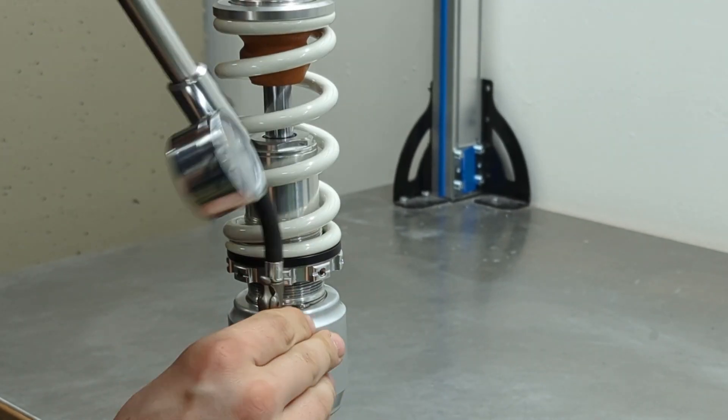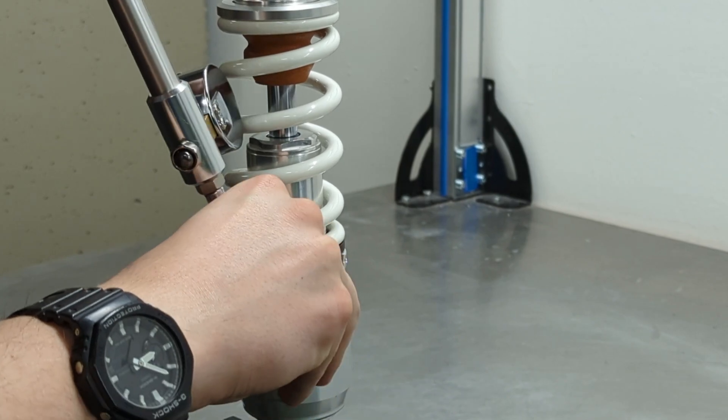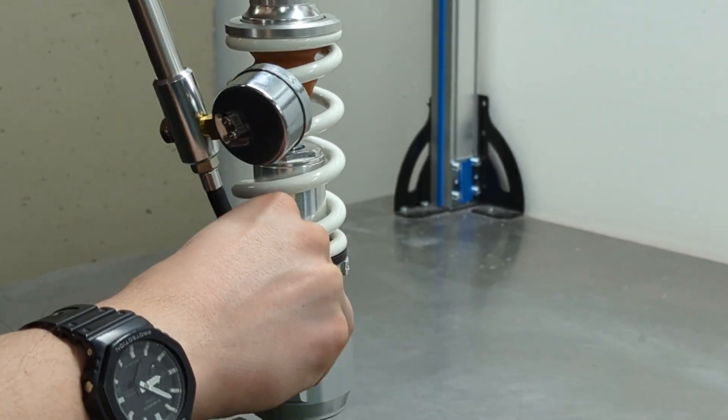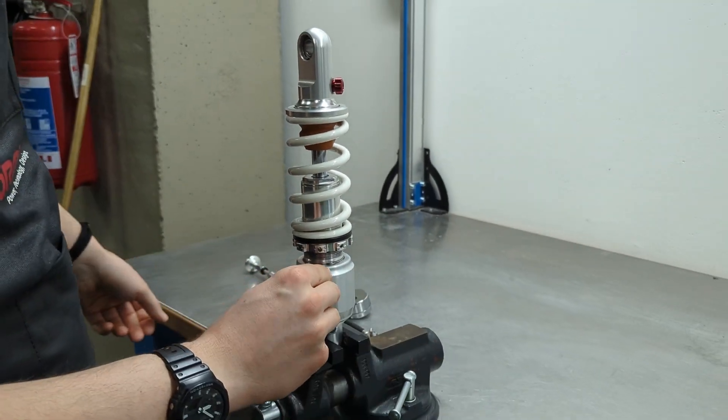If the pressure is correct, close the pump valve duct and remove the pump. Screw the reservoir cap.